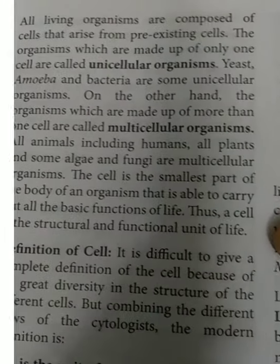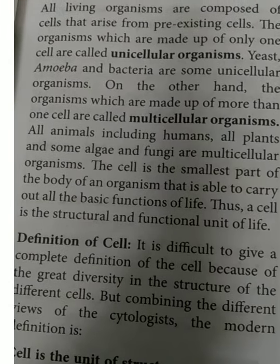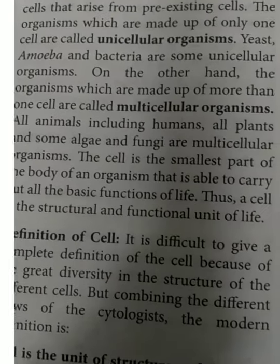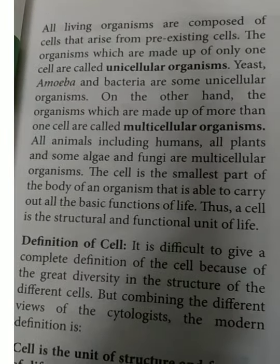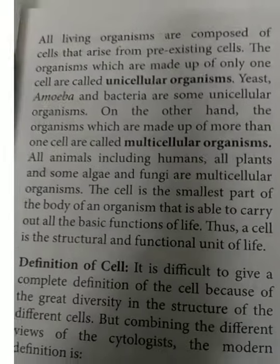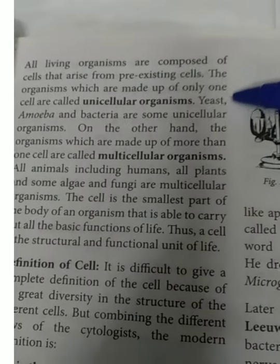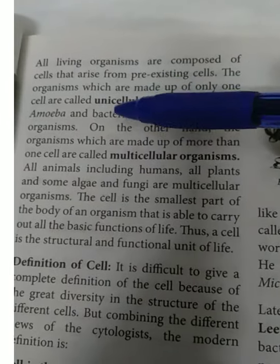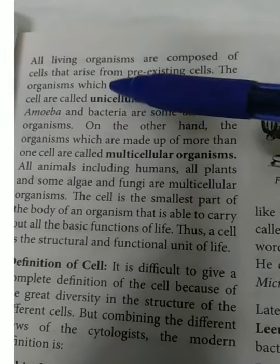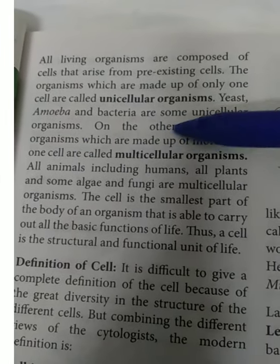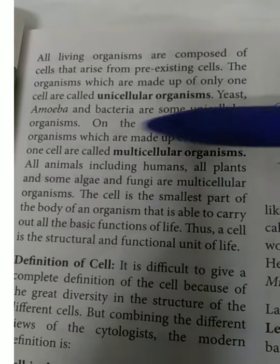All living organisms are composed of cells that arise from pre-existing cells. All organisms are made up of small units called cells. The organisms which are made up of only one cell — such as amoeba and bacteria — are called unicellular organisms.